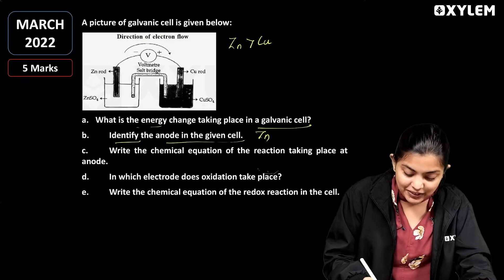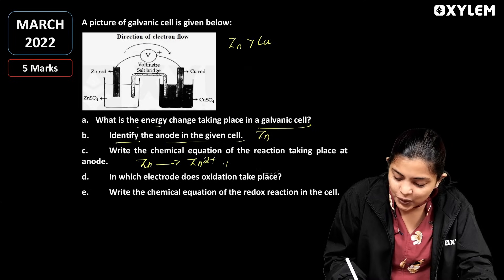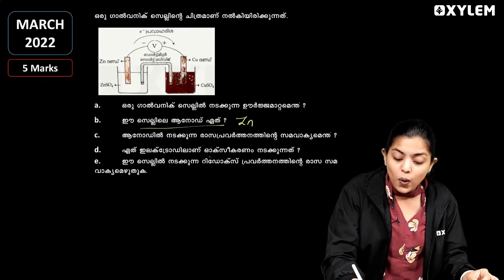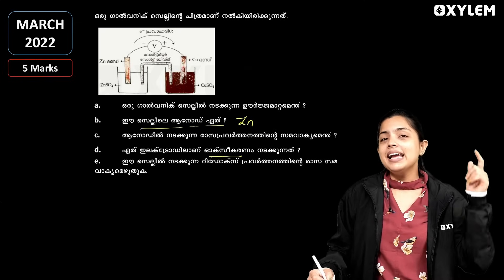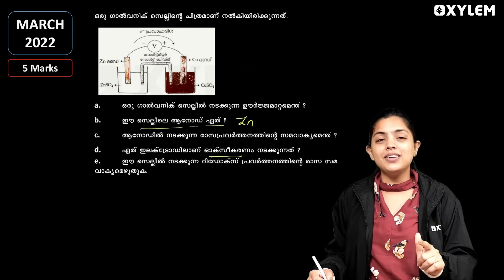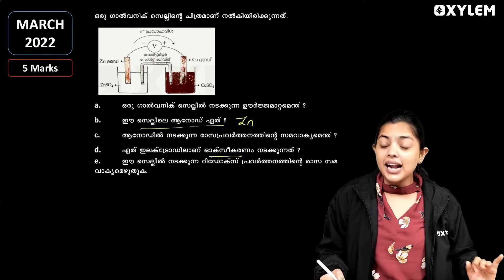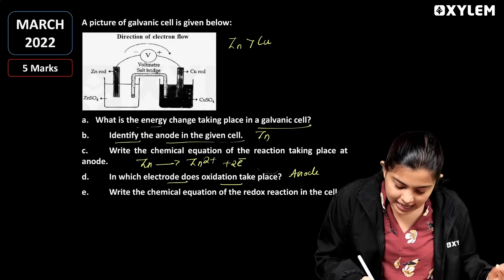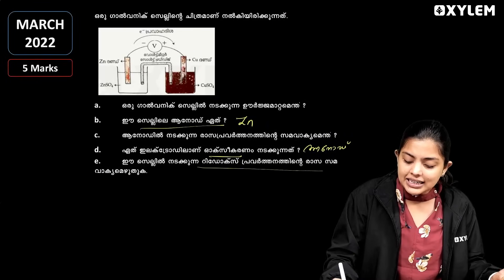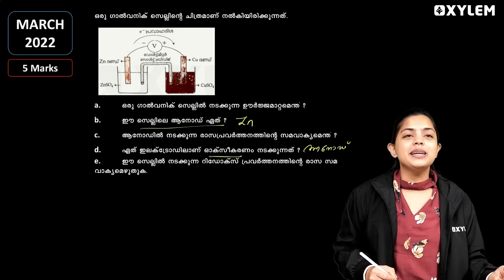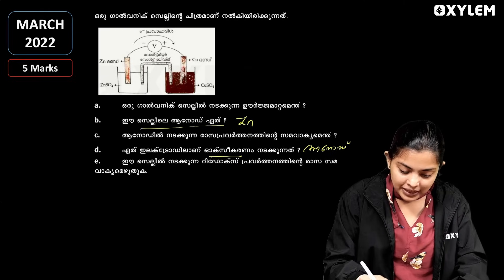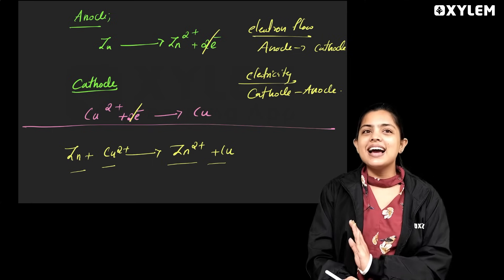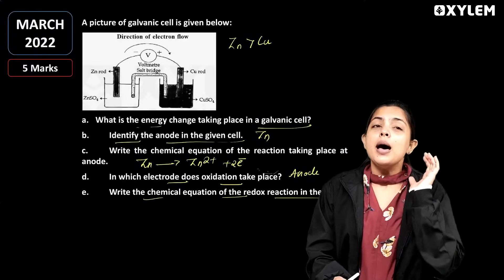This is the oxidation of the two electrodes. In which electrode does oxidation take place? If we say the left side is negative, that is the oxidation at the anode. Write the chemical equation of the redox reaction in this cell: Zn + Cu²⁺ → Cu. This is the reaction here.